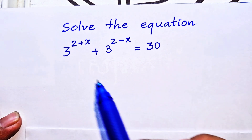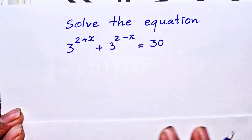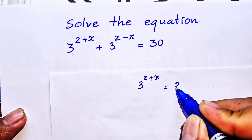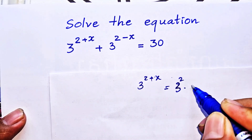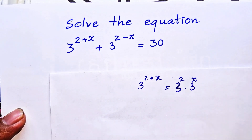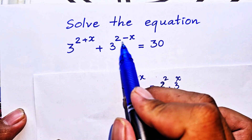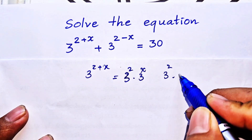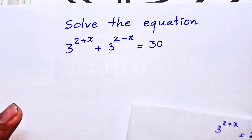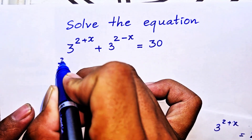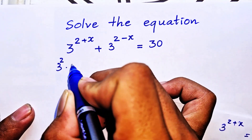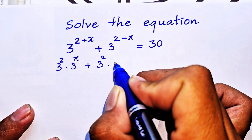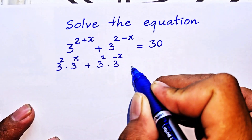Okay, this is the first step. We see that 3 to the power (2 + x) can be written as 3² times 3^x, and 3 to the power (2 − x) can also be written as 3² times 3 to the power negative x. So we get 3² · 3^x plus 3² · 3^(−x) equals 30.